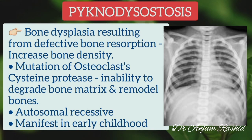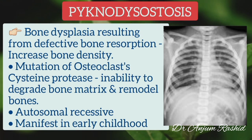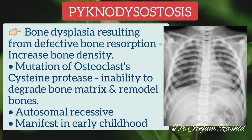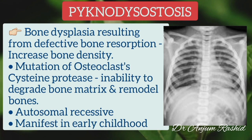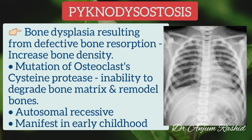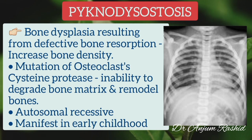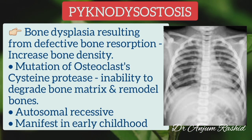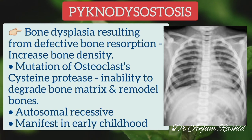Pycnodysostosis is an important differential of osteopetrosis in children. It is a bony dysplasia resulting from defective bone resorption leading to increased bone density. It is due to a mutation of osteoclast cysteine protease; because of this enzyme defect there is inability of the osteoclast to degrade bone matrix and remodel bones. It is an autosomal recessive disorder.